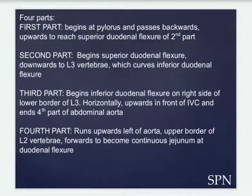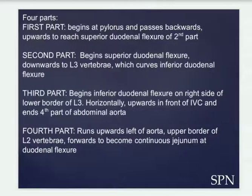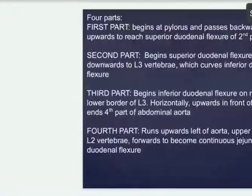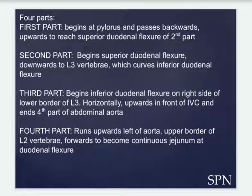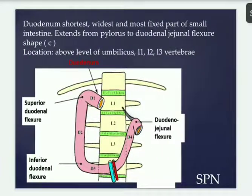There are four parts. The first part, D1, begins at the pylorus and passes backwards and upwards to reach the superior duodenal flexure of D2. The second part, D2, begins at the superior duodenal flexure, passes downwards to L3 vertebra, and curves into the inferior duodenal flexure.